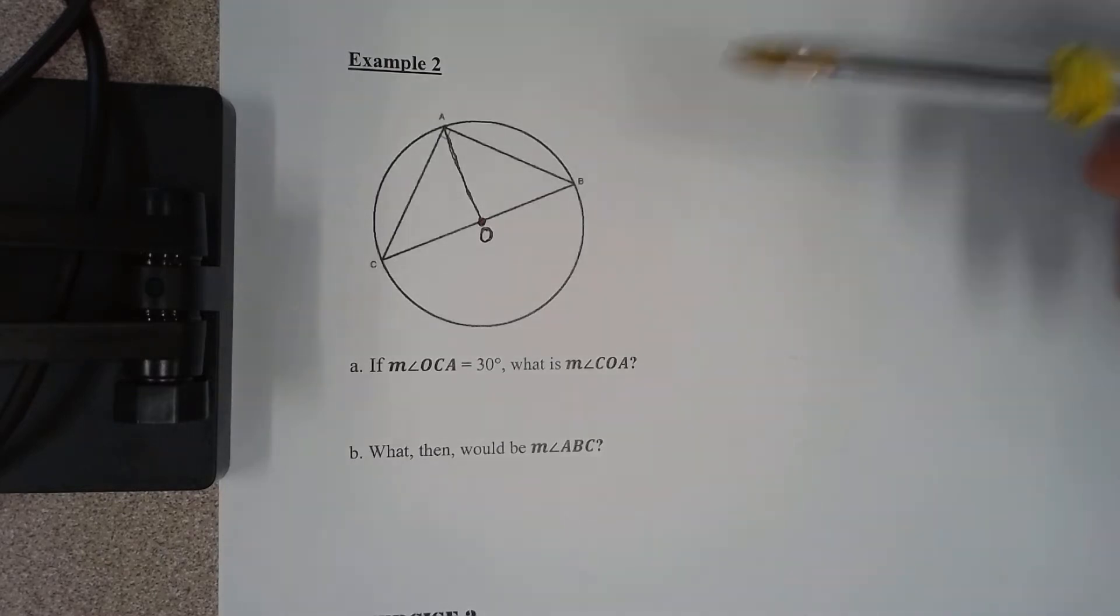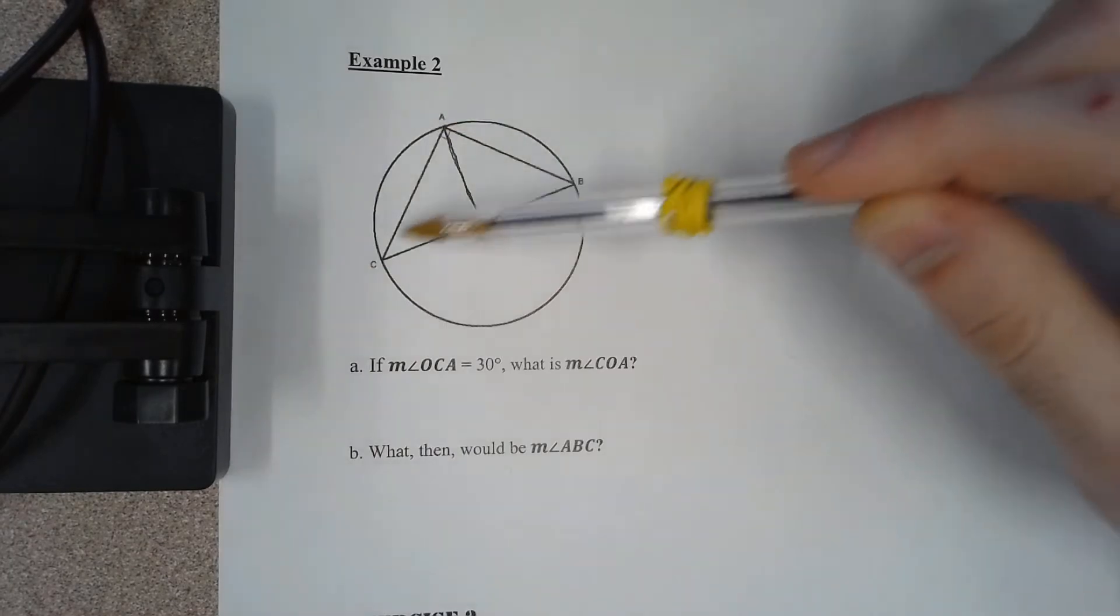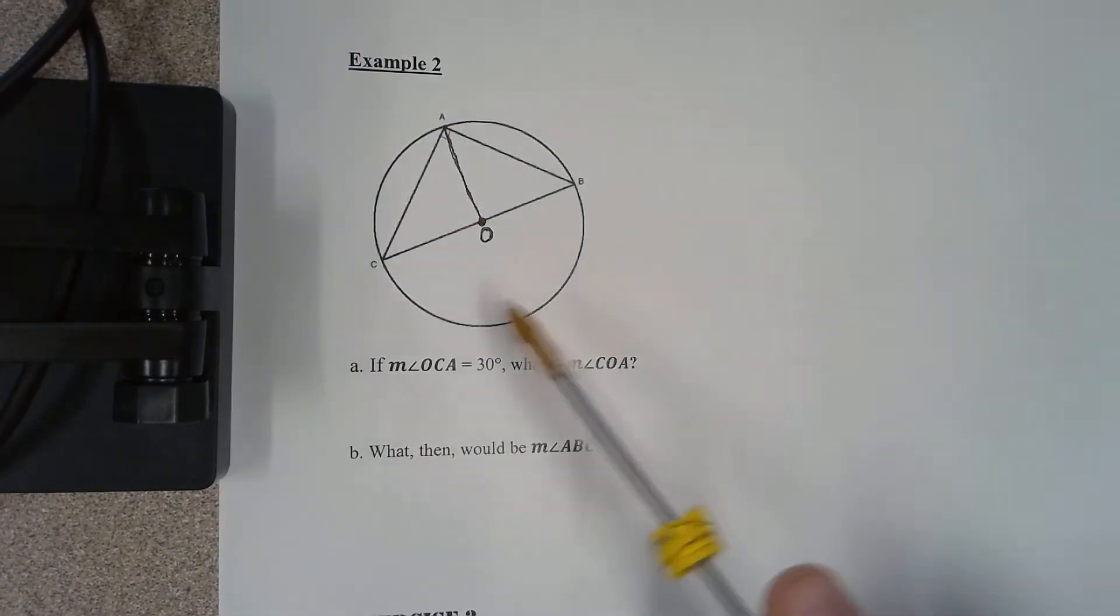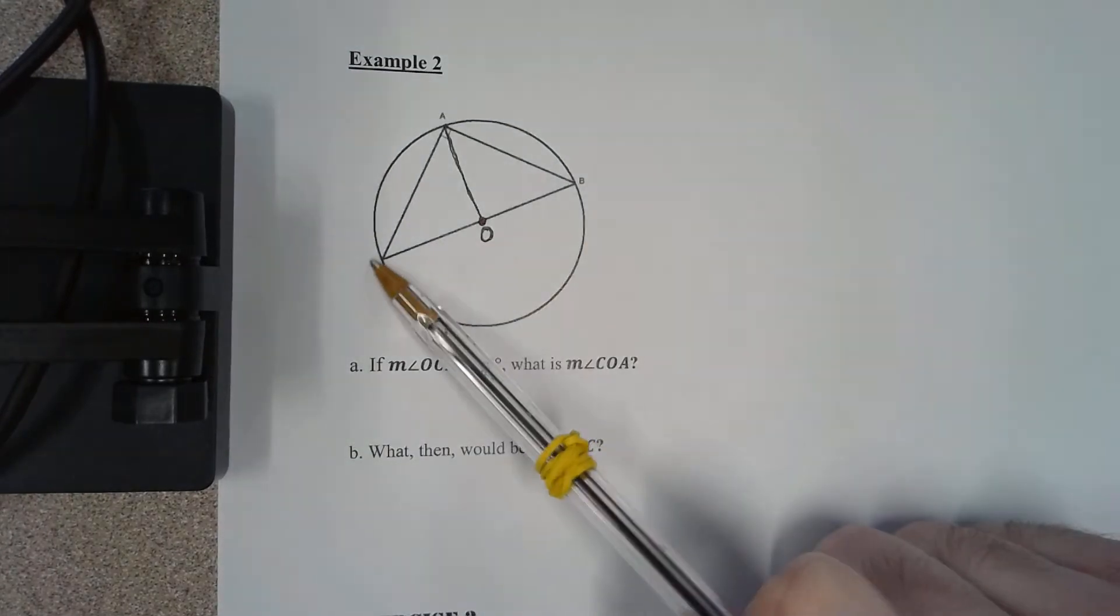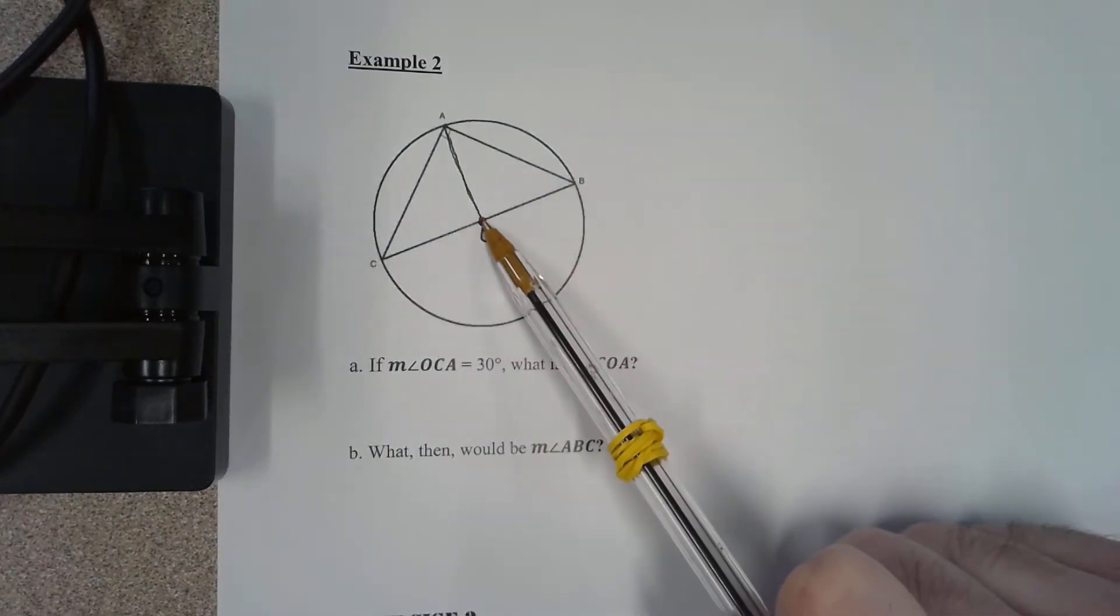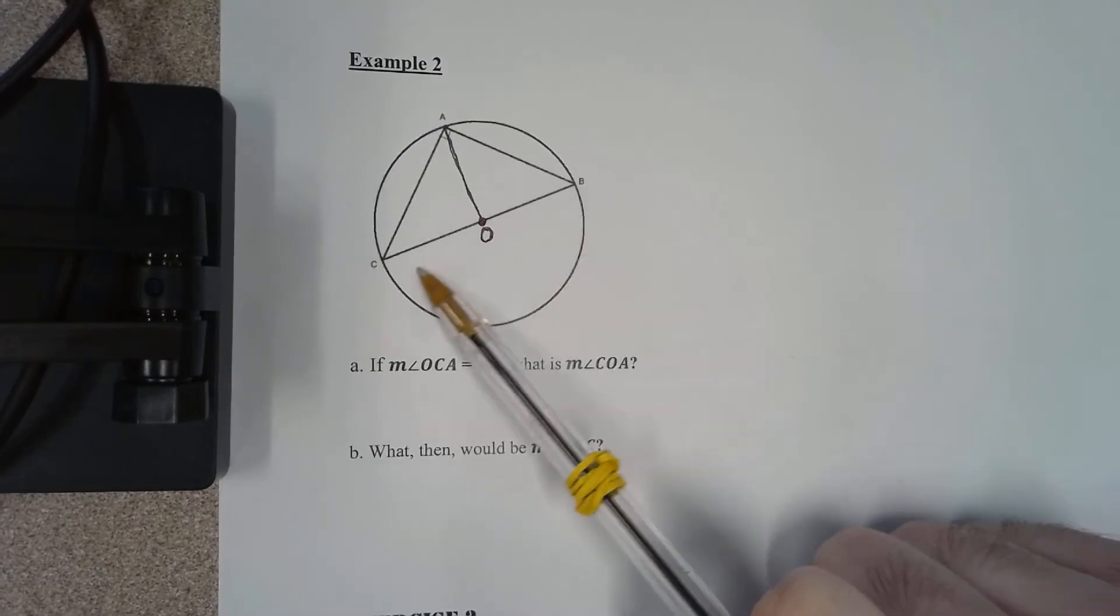If you have three points on a circle, in this case the points are A, B, and C, if two of those points form the diameter, which they do because B and C crosses through the center of the circle, so B and C is the diameter.